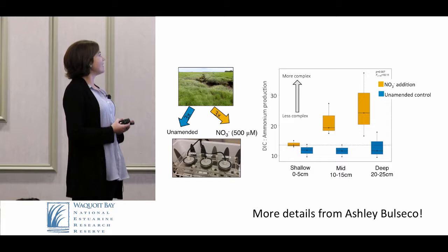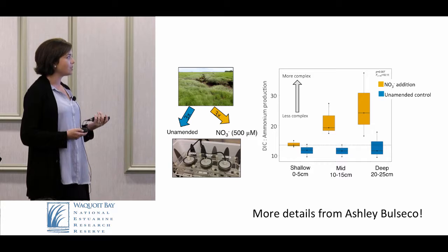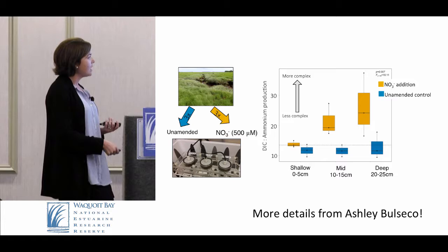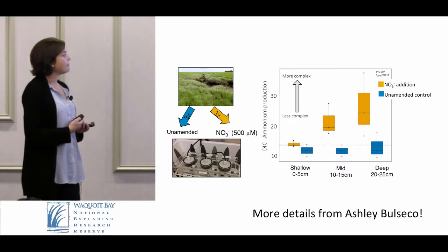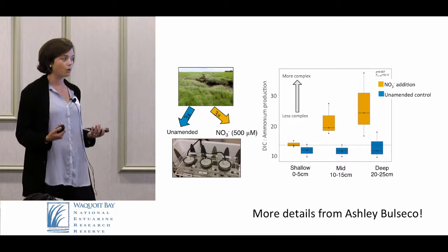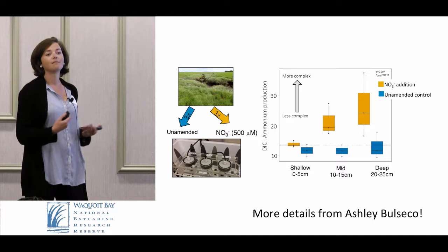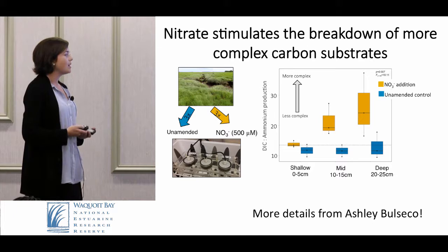Ashley Belseco, who will talk after this, is going to discuss her elegant controlled experiment that looks at this further. This graph shows that when you add nitrate — the orange bars — in salt marsh sediments from shallow, mid, and deep depths, the ratio of DIC to ammonium production increases. This ratio is a proxy for the carbon quality being decomposed: a higher C:N ratio indicates that more complex carbon substrates are being accessed.